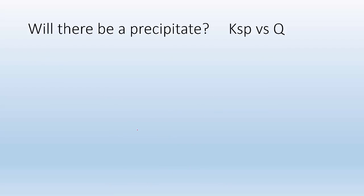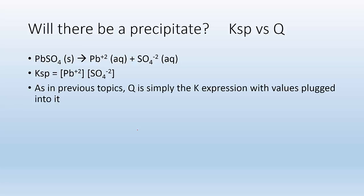Will there be a precipitate? In order to figure that out, you got to look at Ksp versus Q. So if this is our example, we have lead sulfate. That's going to dissolve into Pb+2 ion and SO4-2 ion. Ksp is going to be Pb+2 times concentration of the sulfate ion.